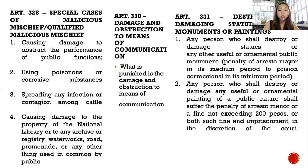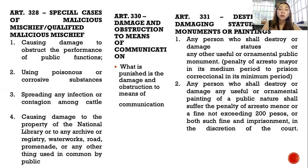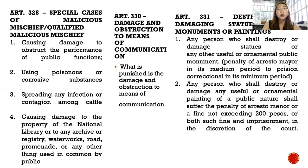Special cases of malicious mischief or qualified malicious mischief under Article 328: the penalty is qualified when — causing damage to obstruct the performance of public functions; using poisonous or corrosive substances; spreading any infection or contagion among cattle; or causing damage to property of the National Library or any archive, registry, waterworks, road, promenade, or any other thing used in common by the public.